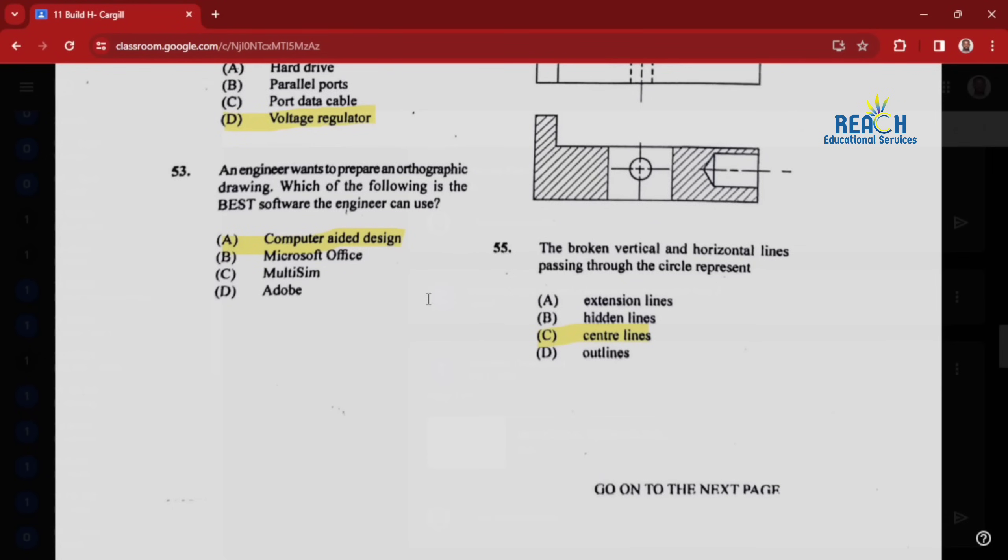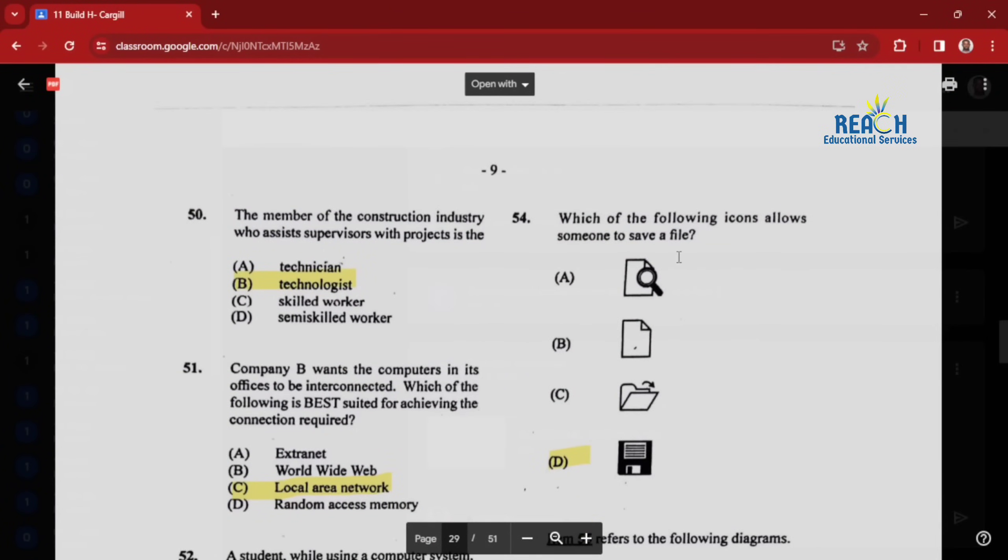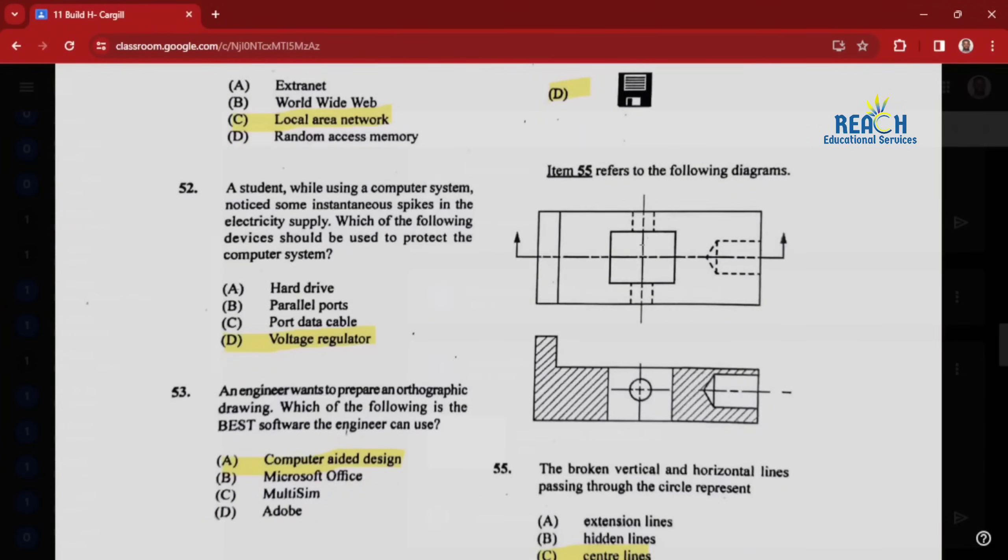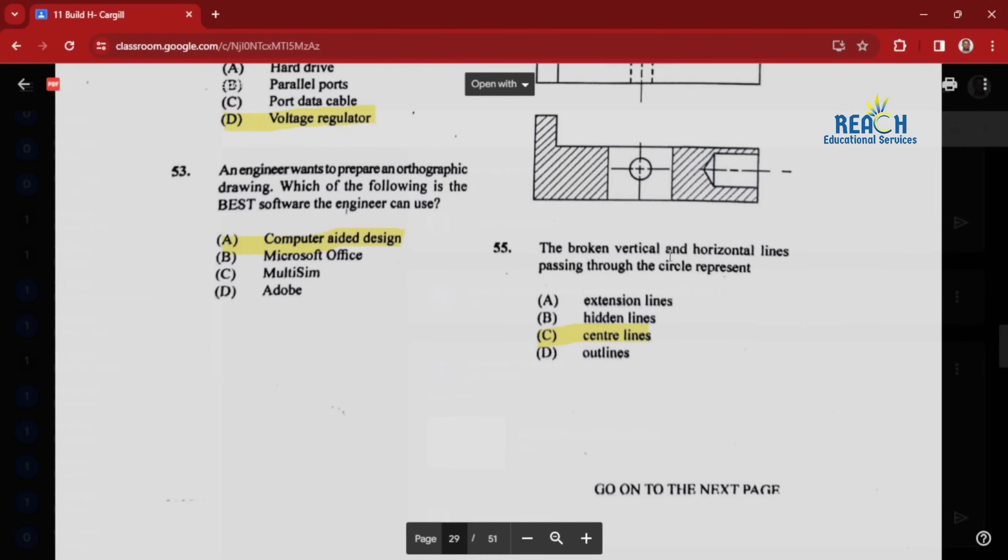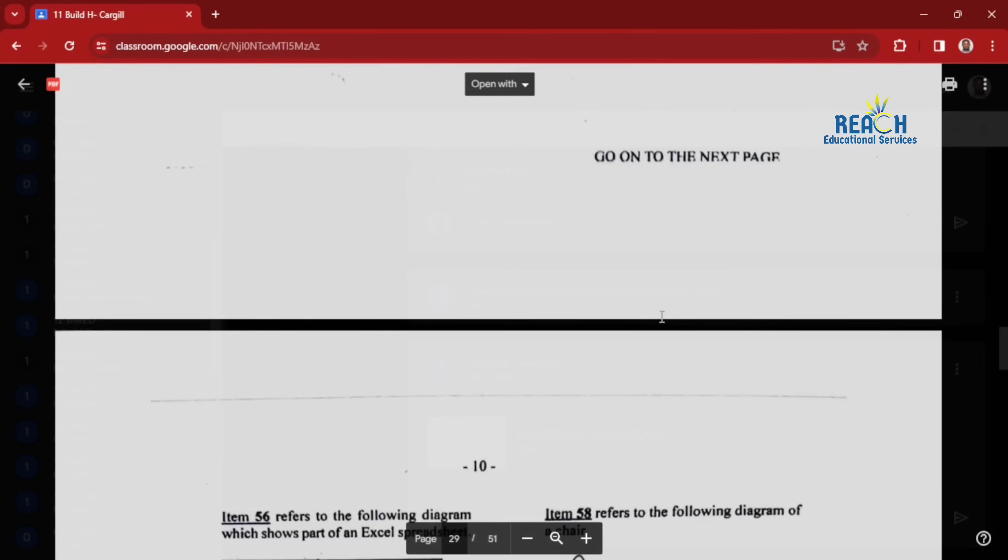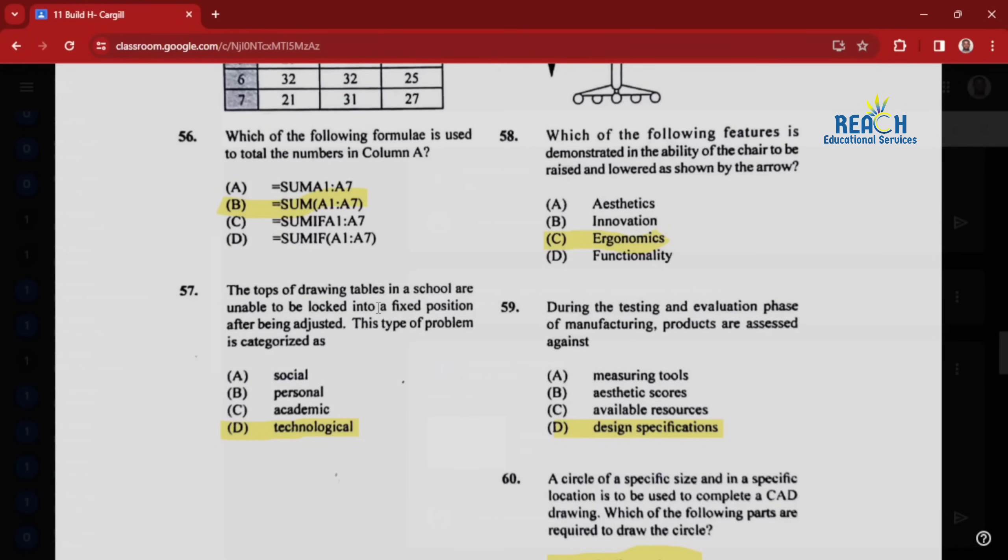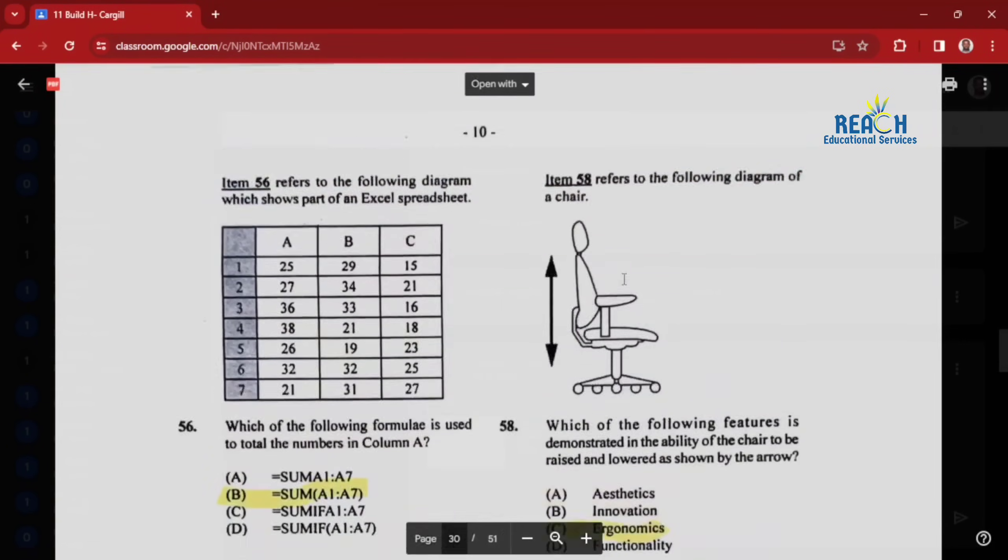Question fifty-three: an engineer wants to prepare an orthographic drawing. Which is the best software the engineer can use? CAD, computer-aided design, so that would be like AutoCAD. Question fifty-four: which of the following icons allows someone to save a file? This one right here with the thing that looks like a floppy disk. Item fifty-five refers to the following diagrams. The broken vertical and horizontal lines passing through the circle represents center lines. Item fifty-six refers to part of an Excel spreadsheet. Which formula is used to total the numbers in column A? That would be equal SUM open bracket A1:A7 close brackets. Question fifty-seven: the top of drawing tables in a school are unable to be locked into a fixed position after being adjusted. This type of problem is categorized as a technological problem.